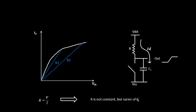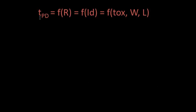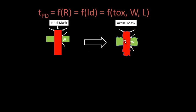R is not constant but varies with drain current ID. Connecting everything we've learned: propagation delay is a function of resistance; resistance is a function of drain current; and drain current is a function of oxide thickness, W, and L — as shown in the drain current equation from the beginning of this lecture series. So if W and L vary, drain current varies, resistance varies, and propagation delay varies. Similarly, if oxide capacitance varies, drain current varies, resistance varies, and propagation delay varies.